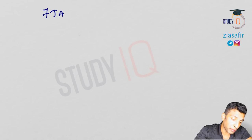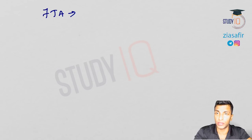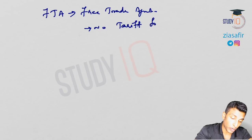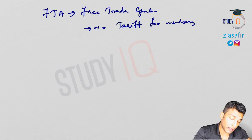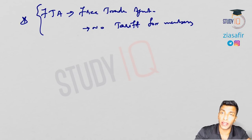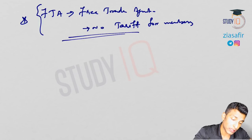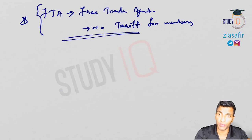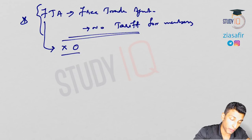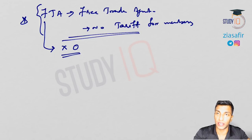The next level of integration is the Free Trade Agreement (FTA). As the name indicates, there is no tariff for member countries — free trade among members. Practically speaking, it may not be completely zero tariff, but there will be a significant reduction — higher than that under a preferential trade agreement. India has signed a free trade agreement with ASEAN, for example.